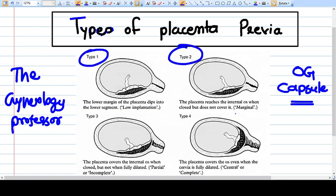Type 2 means the placenta reaches the internal os when closed but does not cover it. That means the placenta has reached up to the margin and not on or into the internal os.